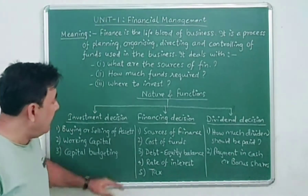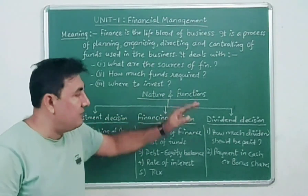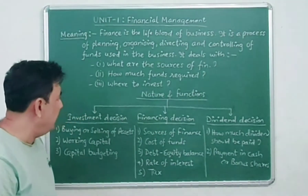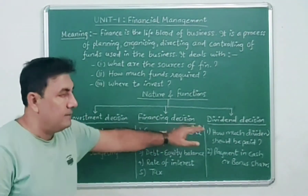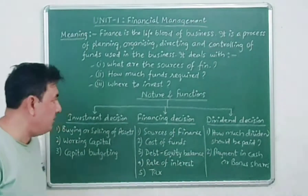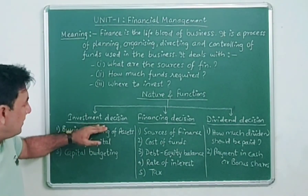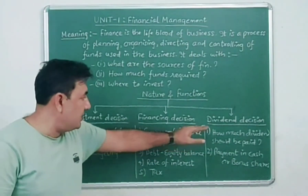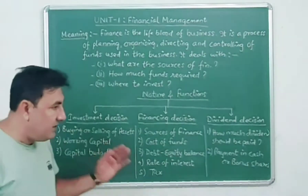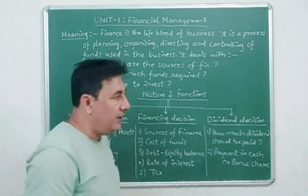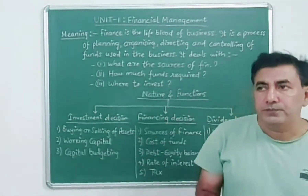Now, let's see what the main functions of financial management are. Basically, there are 3 major functions: investment decision, financing decision, and dividend decision. These are the 3 decisions for financial management.